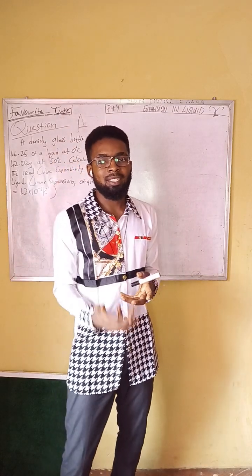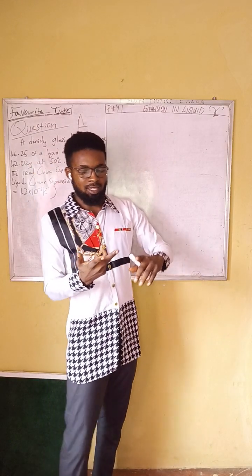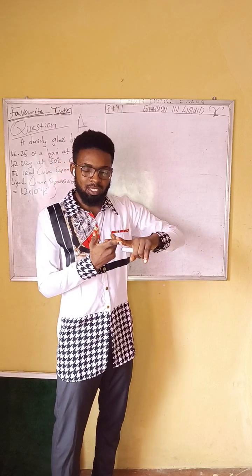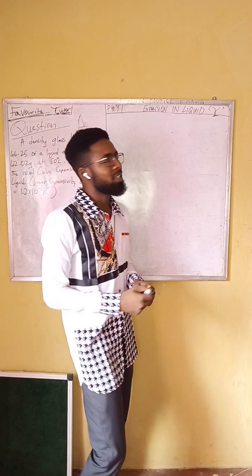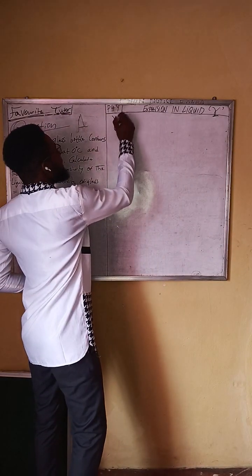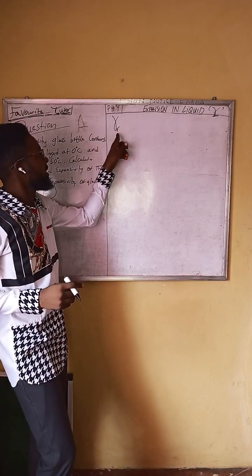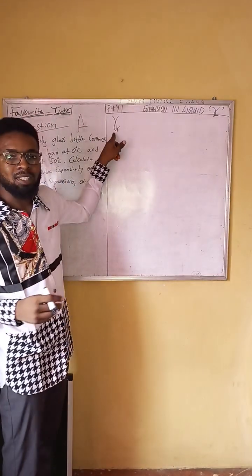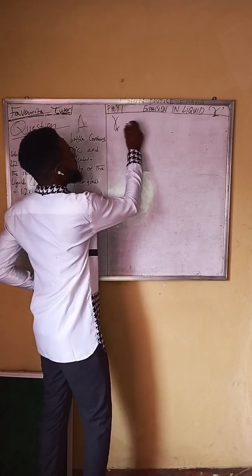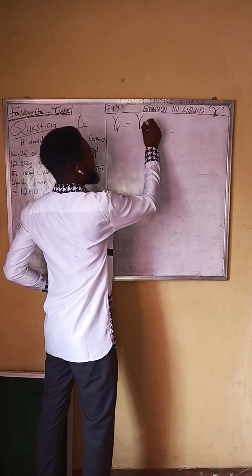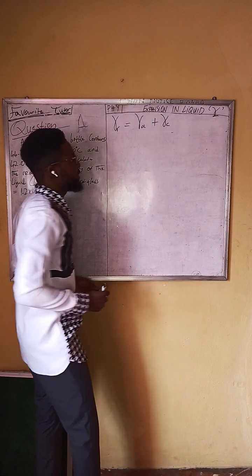We add heat, and then two things are involved: the vessel expands and the liquid also expands. So we have the real cubic expansivity in liquid, which is the real cubic expansivity of the liquid.